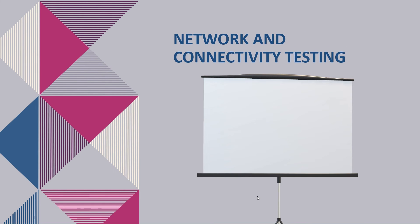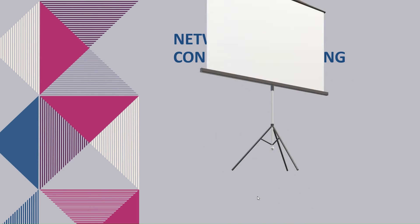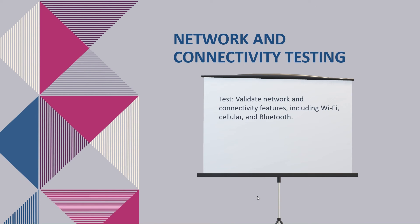Next is network and connectivity testing. This includes thousands of test cases that validate network and connectivity features including Wi-Fi, cellular, and Bluetooth. Issues like Wi-Fi not getting connected, Wi-Fi and Bluetooth not connecting simultaneously, or no signal for phone calls come under this category. If connectivity issues arise, device manufacturers or application developers may issue software updates to improve network compatibility and reliability.